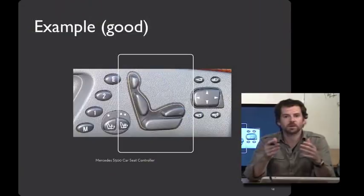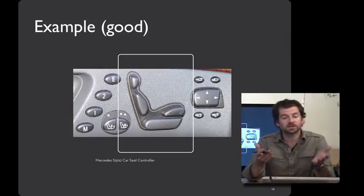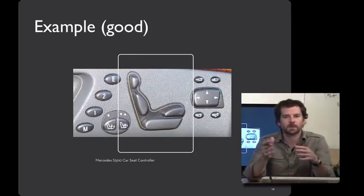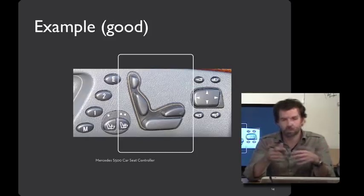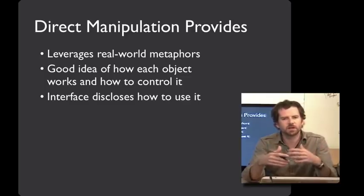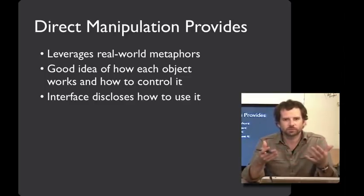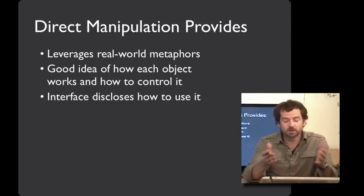The butterfly ballot caused problems because the representation was confusing — what lined up with what was hard to figure out. Here's a much better example: a seat user interface for an automobile that employs a world-in-miniature strategy. It offers controls for manipulating parts of the seat, and the interface is a miniature seat itself. If you'd like to move the headrest back, you move the miniature headrest back. By having this clear mapping, users are much less likely to make errors. Direct manipulation enables users to behave with more expertise by leveraging familiar real-world metaphors — moving a slider means moving a slider — giving users a clear idea of how each object works.